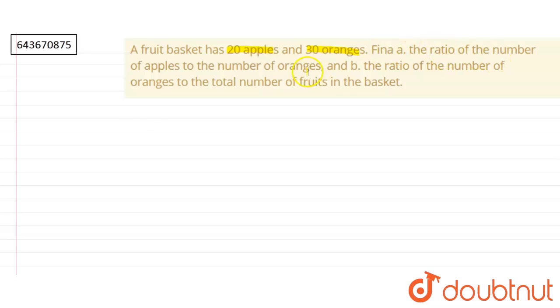We have to find the ratio of number of apples to the number of oranges, and B, the ratio of number of oranges to the total number of fruits in the basket. So there are two parts.